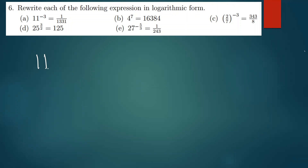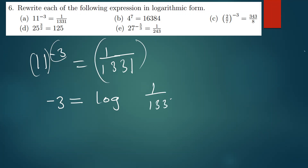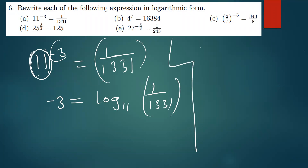The first one: 11 to the power negative 3 equals 1 over 1331. It's also very simple. How do you convert this to log? The base is the base. You can start by writing the power: negative 3 equals log of 1 over 1331, base 11. So we put our 11 as the base.